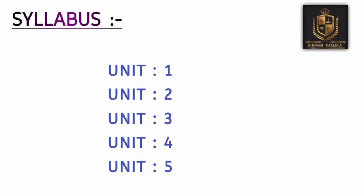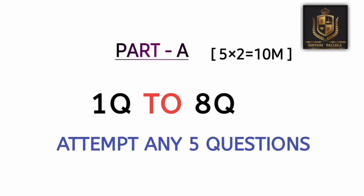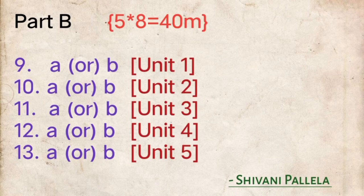The subject has a total of five units and a 50-marks question paper. In Part A, you need to attempt five questions out of eight; each question carries two marks, and you must write at least six to seven lines. In Part B, you attempt five questions, each carrying eight marks, and each question will have an internal choice.